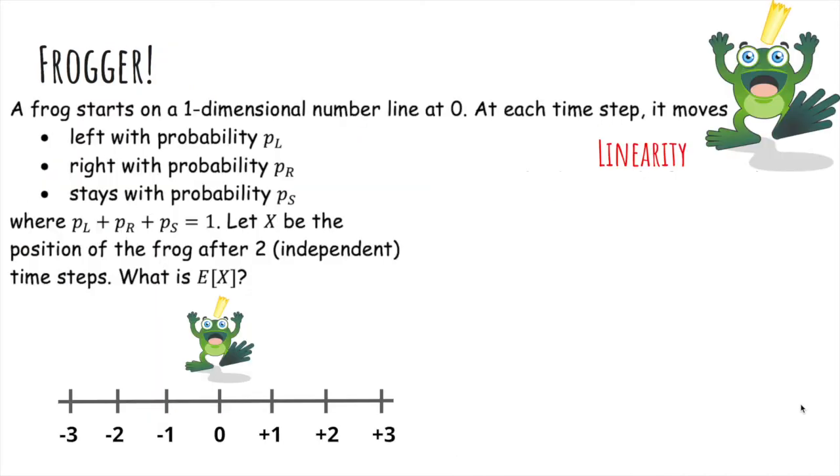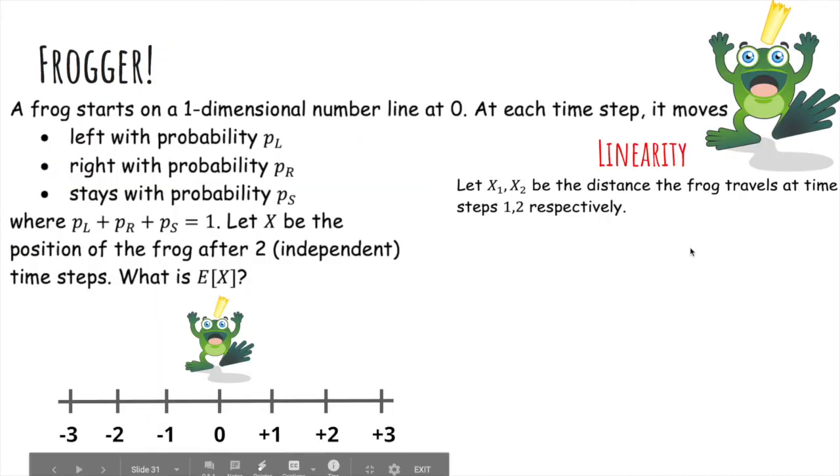So now let's try it with linearity instead. Let x1 and x2 be the distance the frog travels at time steps 1 and 2, respectively.